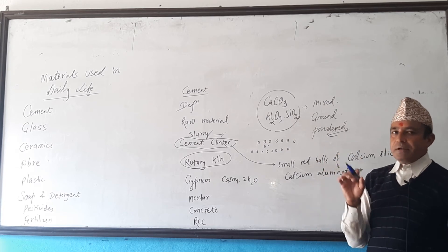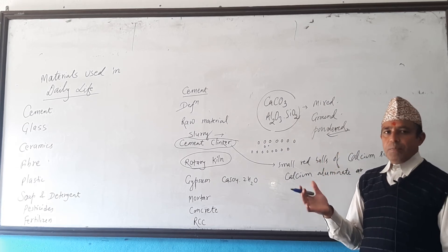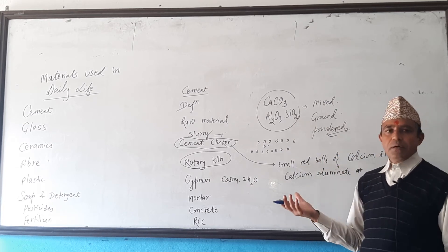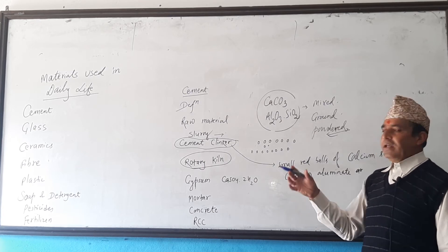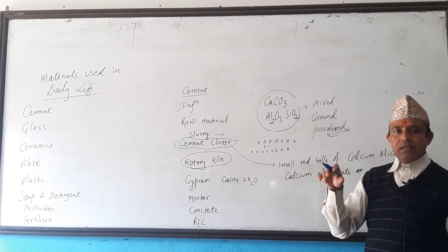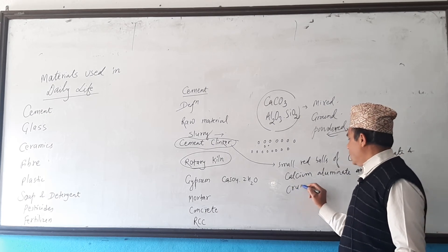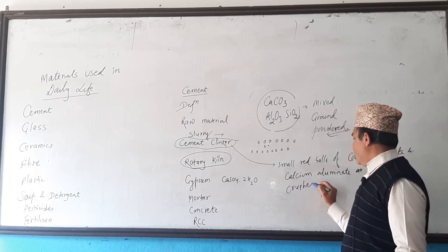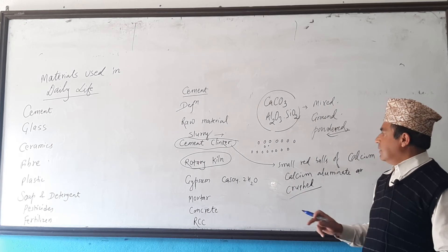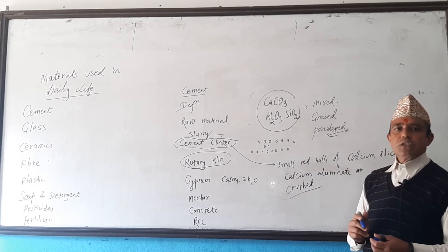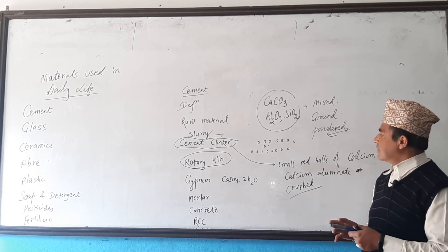Those small red balls are called cement clinkers. At first they are red because of the high temperature, but when they cool down they become grey in color. When the cement clinker is crushed, we get cement powder.